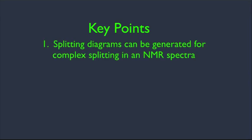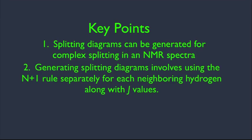Number one, we're going to see that splitting diagrams can be generated for complex splitting in an NMR spectra. We also want to make sure we see that generating splitting diagrams involves using the n+1 rule separately — very important — separately for each neighboring hydrogen, along with the J values.